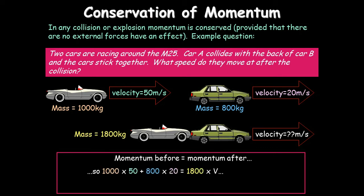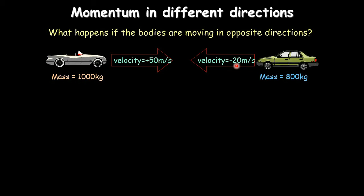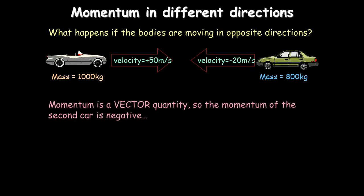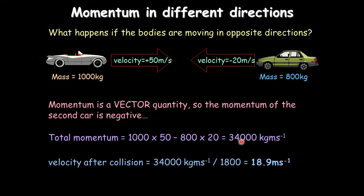This is for higher only: momentum before equals momentum after — conservation of momentum. The cars' total momentum before equals their combined mass times velocity after, giving you the answer. For cars going in opposite directions, assign a minus sign to the one going the opposite way. The car with more mass and velocity has more momentum; adding with the minus sign gives the net momentum, divided by total mass gives velocity after — with a plus sign showing direction.